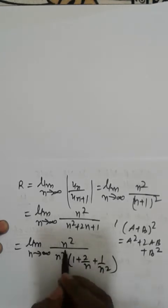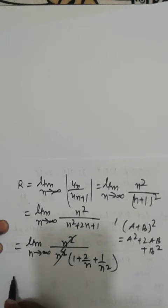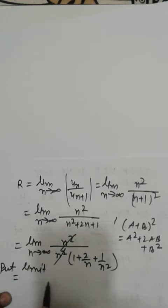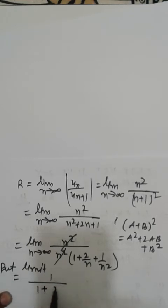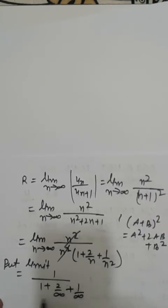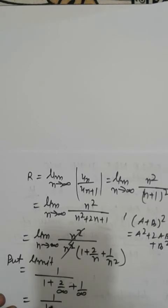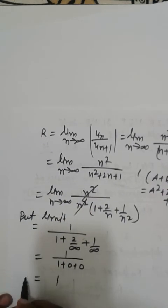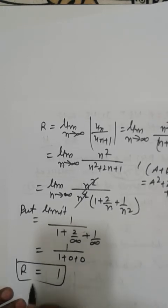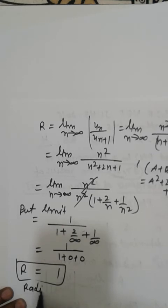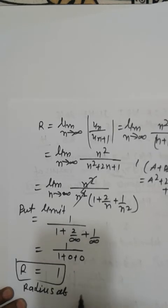Put the limit: we get 1 divided by (1 + 2/∞ + 1/∞). Since 1/∞ is 0, we get 1/(1 + 0 + 0), which equals 1. So R, the radius of convergence, equals 1.